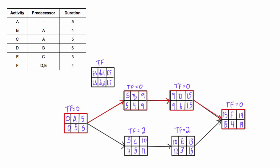Now we want to figure out the free float for each activity. Free float is the amount of time you can delay any activity without delaying the earliest starts of any succeeding activities. Notice that doesn't mention anything about the final end date or the duration of the project — it only refers to the earliest start of any succeeding activity. That's an important difference.